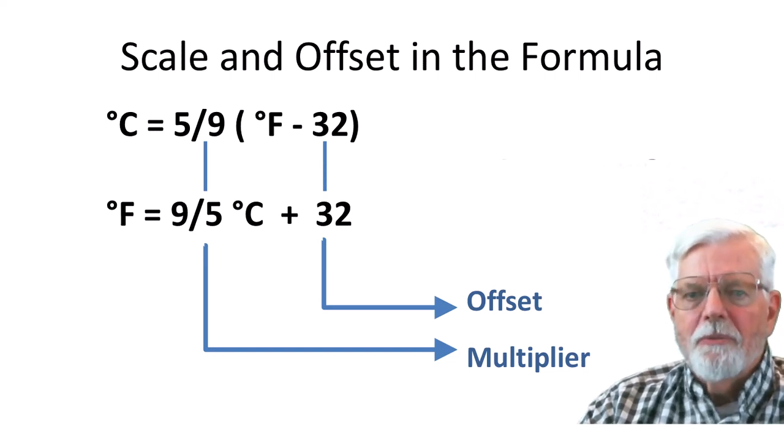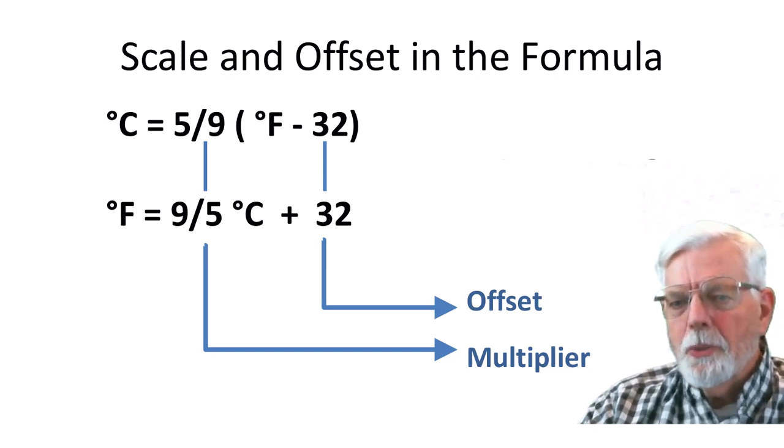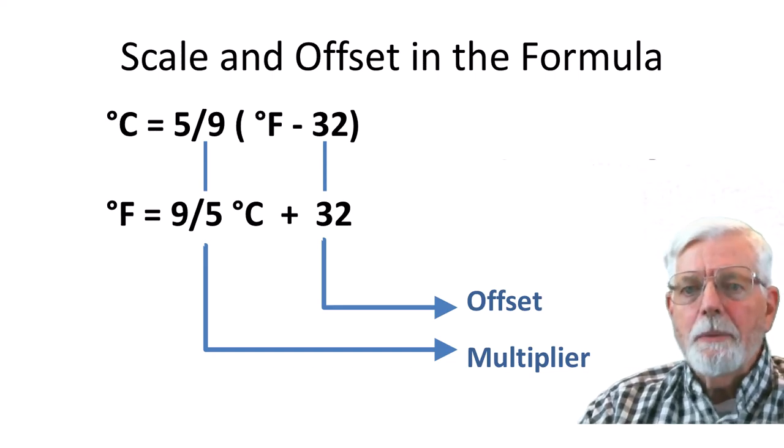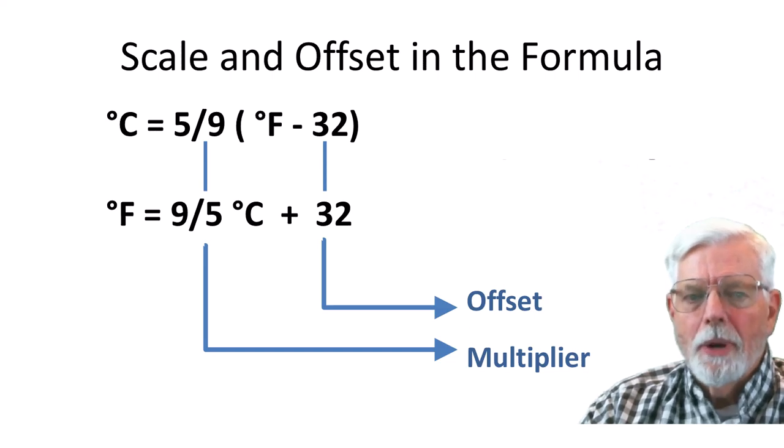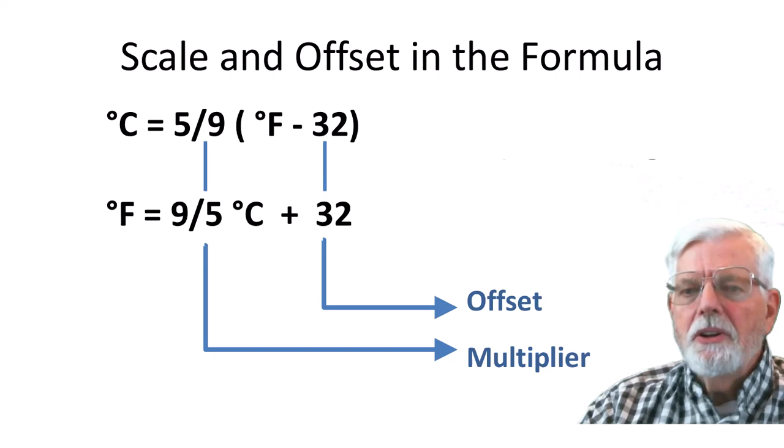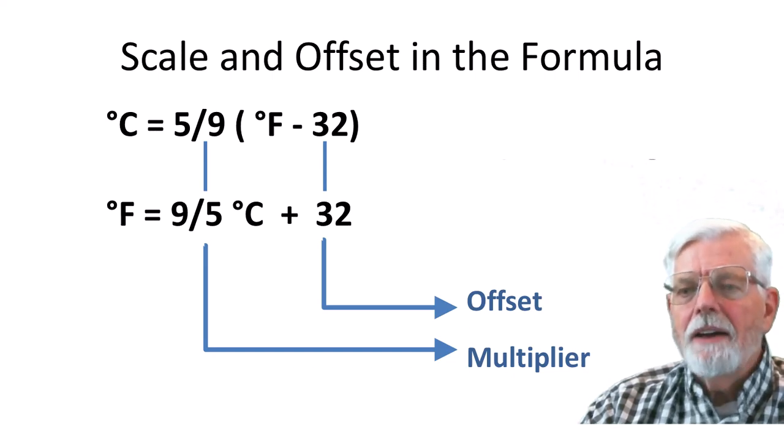When going from Fahrenheit to Celsius, we need to subtract the 32 degrees before applying the multiplier. So, we will need parentheses when we write the formula into code. When going from Celsius to Fahrenheit, we need to add the 32 degrees after the 9 divided by 5 multiplier.